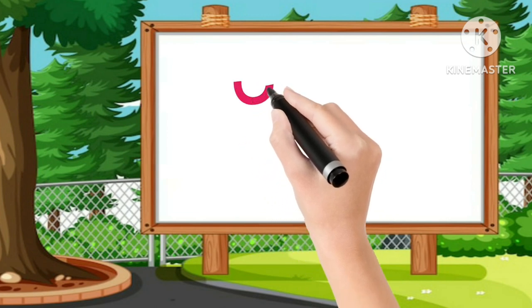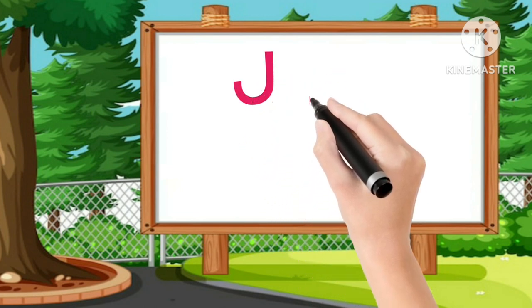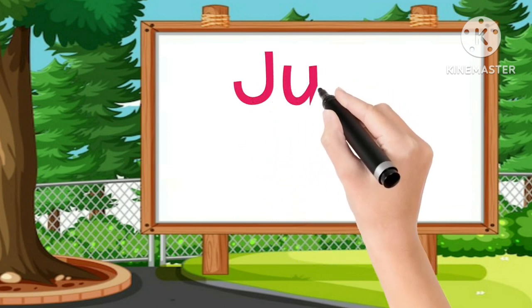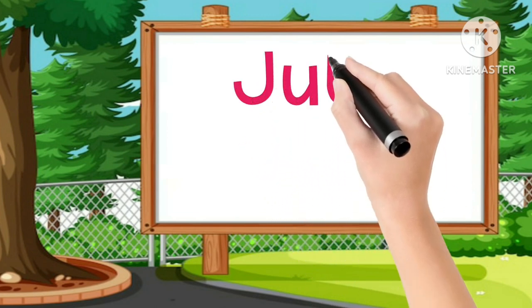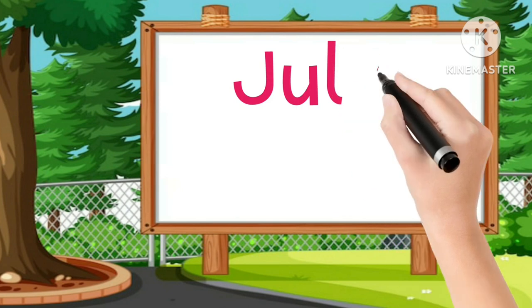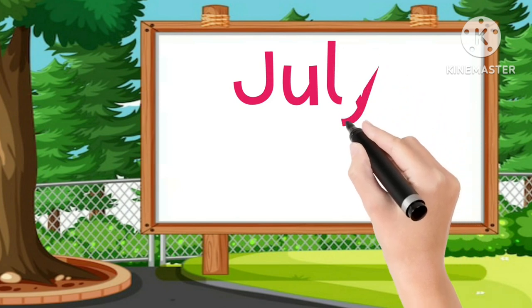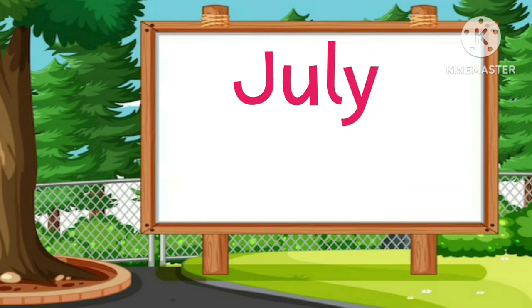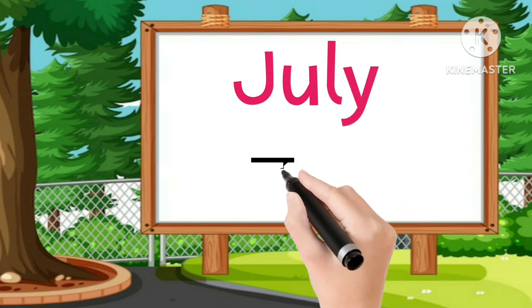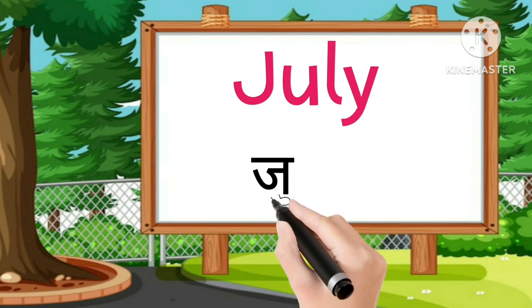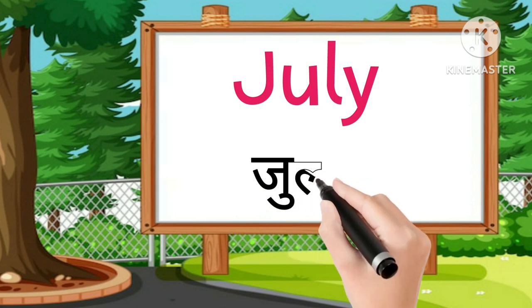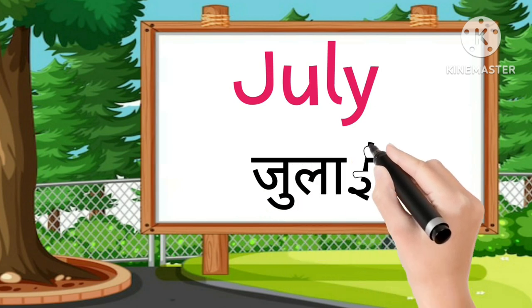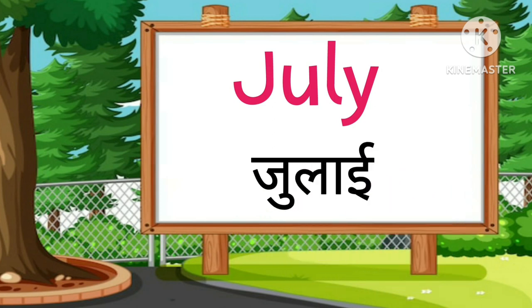J-U-L-Y, July. July is the seventh month of the year.